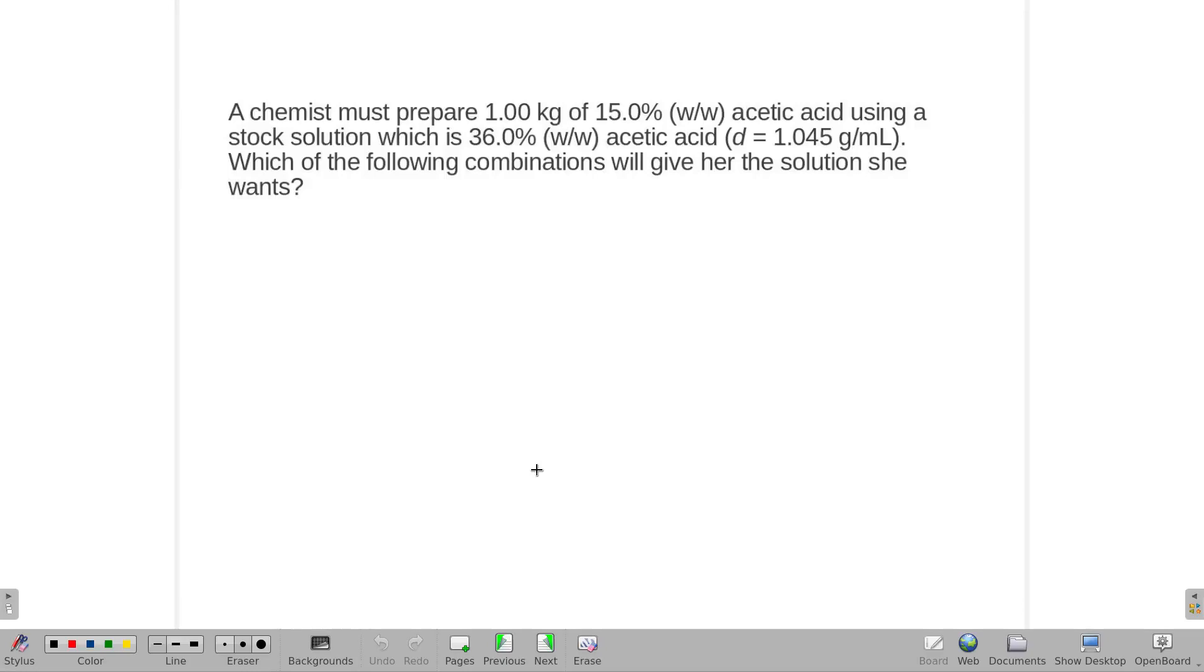A chemist must prepare one kilogram of 15% acetic acid using a stock solution that is 36%. It gives you the density here, but we're going to see that's not necessary. We're just doing a dilution.